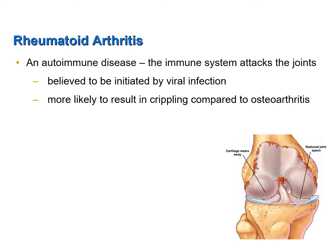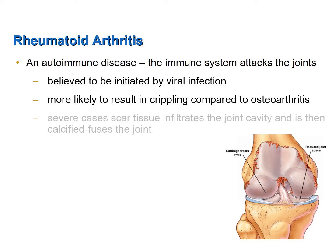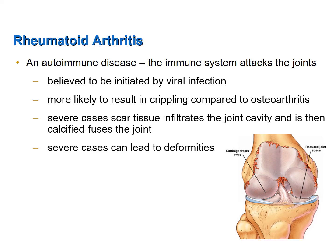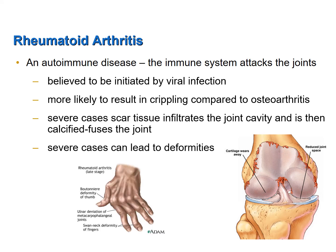Rheumatoid arthritis is much more damaging to the joints in general, and therefore is much more likely to result in crippling compared to osteoarthritis. In severe cases, scar tissue infiltrates the joint cavity and then it's calcified, essentially fusing the joint. That can lead to deformities of the joints, as shown in this picture of late-stage rheumatoid arthritis in the joints of the hand.